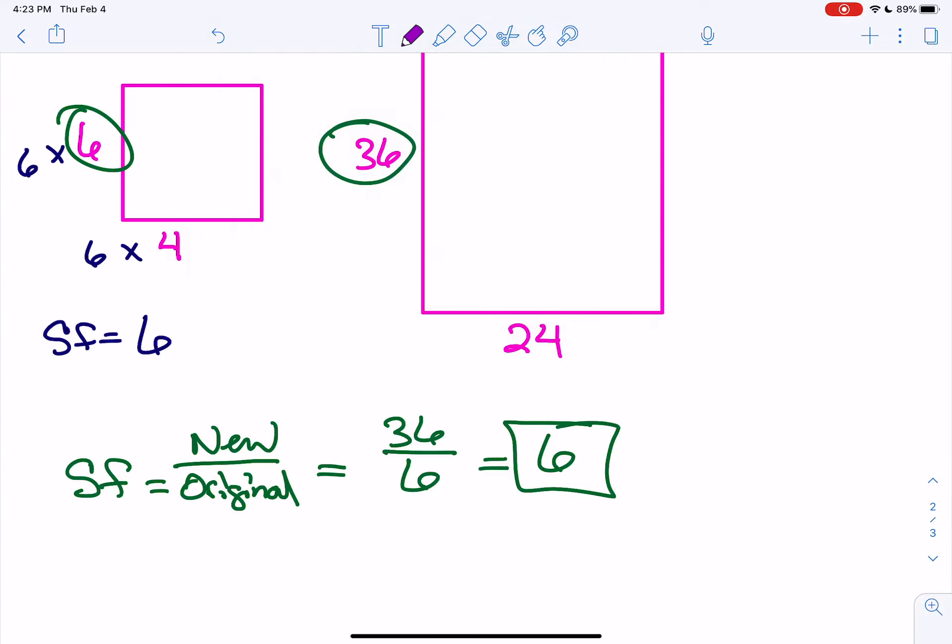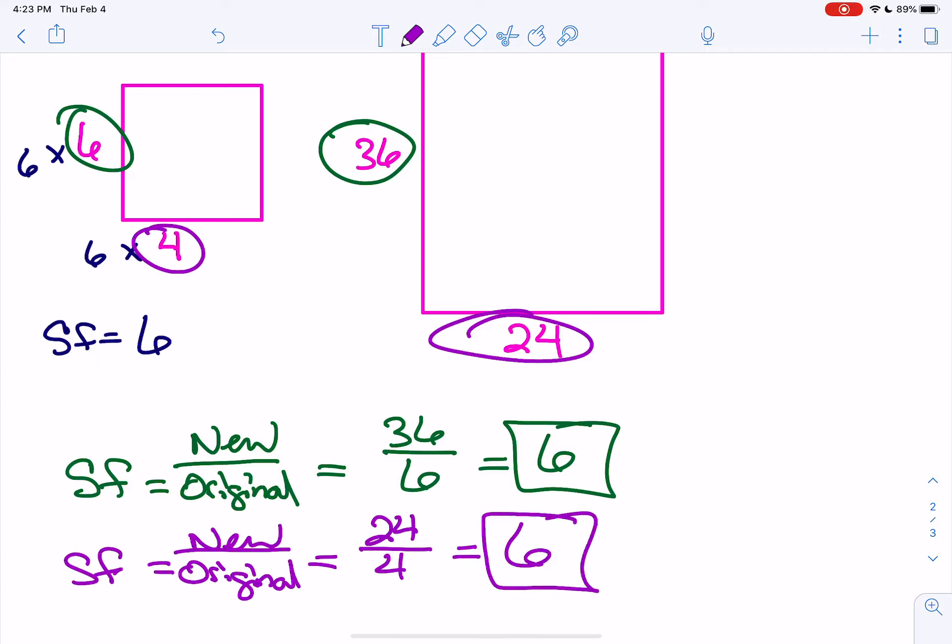Or you could have chosen the other side, 4 and 24. Scale factor equals new over original. The new is 24. The original was 4. 24 divided by 4 is 6. You still get the same answer.